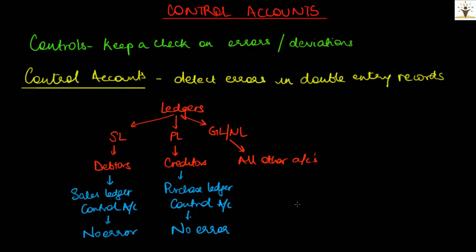If it can be concluded using the control accounts that both the sales ledger and purchase ledger are free from errors, but the trial balance prepared still indicates an error being present, we can conveniently limit our search for errors to only the general ledger. To sum it up, the main function of sales ledger control account and purchase ledger control account is to determine if the respective ledgers are recorded correctly.